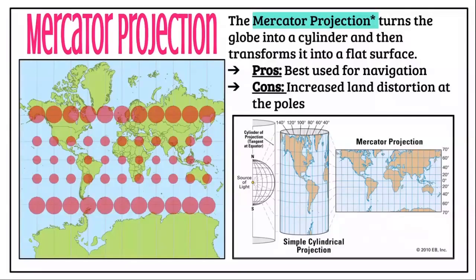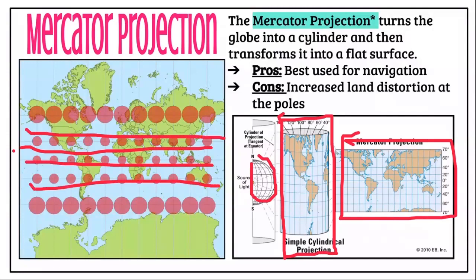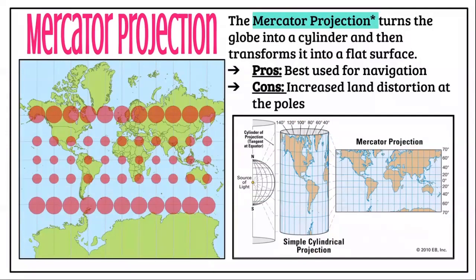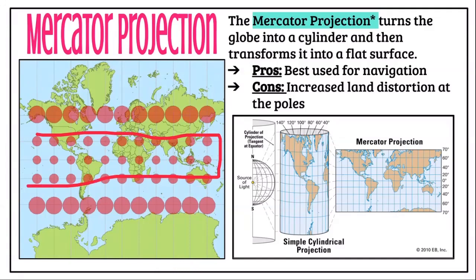For example, the Mercator projection turns the globe into a cylinder first and then flattens it out. It's really good for navigation — historically, navigators were traveling in ships across the globe, trading with each other, spending most of their time in the middle latitudes rather than at the icy poles. So the Mercator projection is good for navigation, but it increases land distortion at the poles.